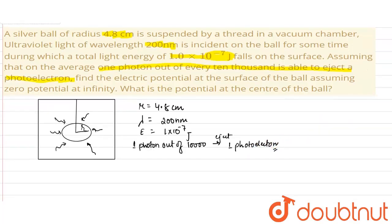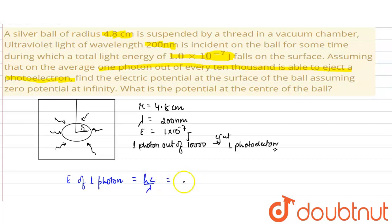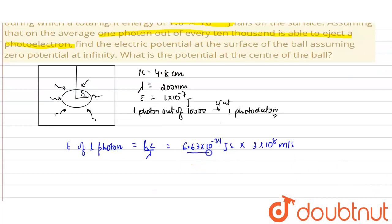We have to find the electric potential at the surface of the ball assuming zero potential at infinity. First, let us calculate the energy of 1 photon. The energy of 1 photon equals hc divided by lambda. The value of Planck's constant is 6.63 × 10⁻³⁴ J·s, the value of c is 3 × 10⁸ m/s, divided by lambda which is 200 nanometers, i.e., 200 × 10⁻⁹ meters.